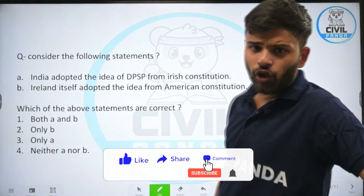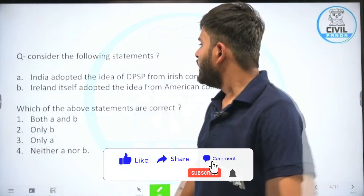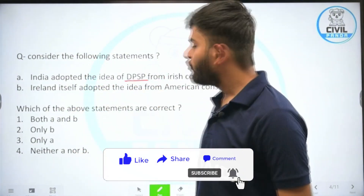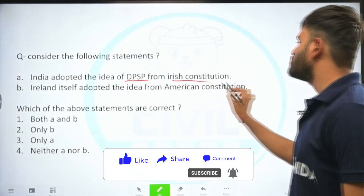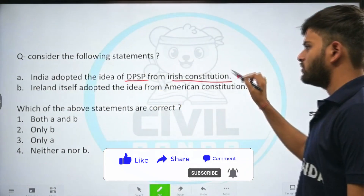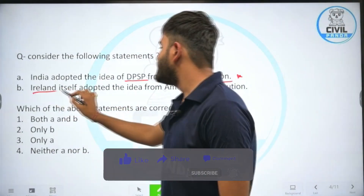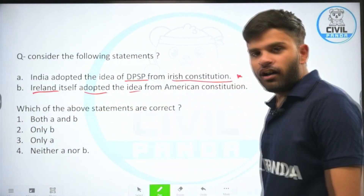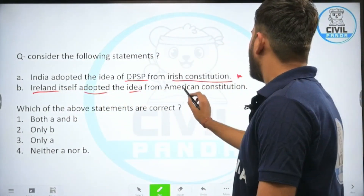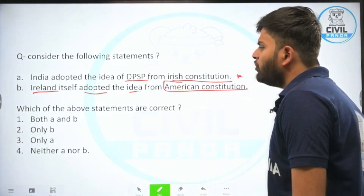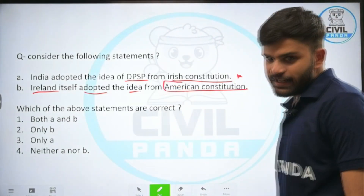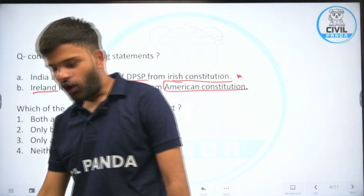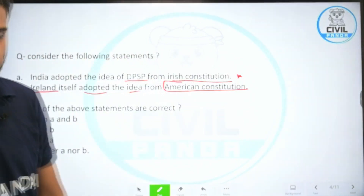Consider the following statements. Statement A: India adopted the idea of DPSP from the Irish constitution. Statement B: Ireland itself adopted the idea from the American constitution. Which of the above statements are correct? Both A and B, only B, only A, or neither A nor B.